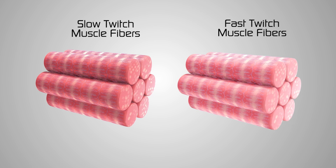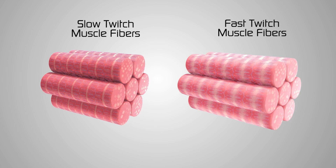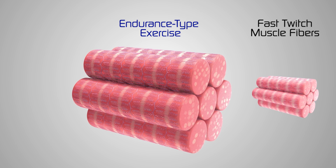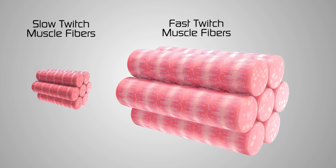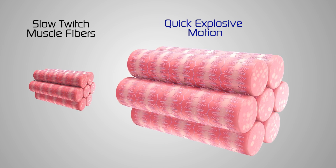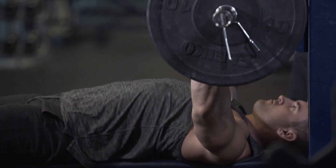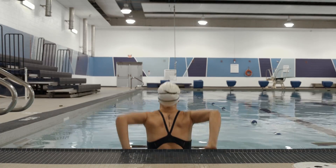Sure thing. These two types of fibers are generally accepted as the main categories into which muscle fibers fall. Slow twitch fibers are better suited for endurance type workouts, while fast twitch fibers are predominantly utilized during quick, explosive motions. Those who have a predominant amount of fast twitch fibers would be great at sprinting or powerlifting, and those with a greater proportion of slow twitch fibers may be better suited for swimming or long distance running.